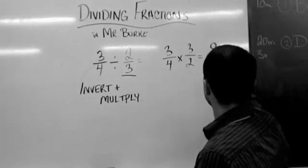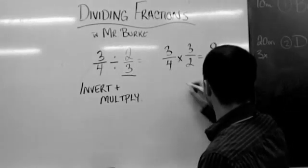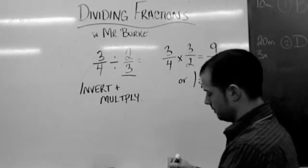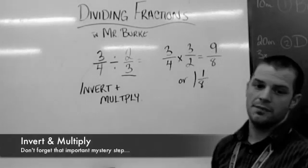9, 2, 4, 6, 8, 9 eighths. Or, you could say 1 and 1 eighth. There's your answer. It's that simple. It truly is that easy.